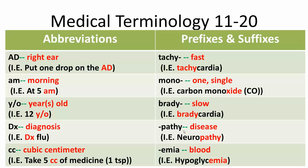Next is -pathy, meaning disease — so neuropathy means a nerve disease. And the last one is -emia, meaning blood — for example, hypoglycemia means an abnormally low level of glucose in the blood.